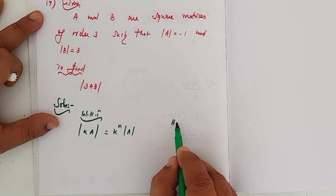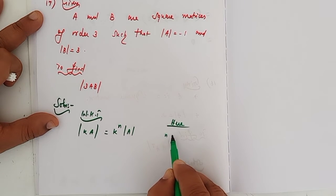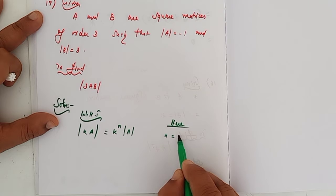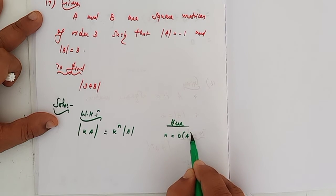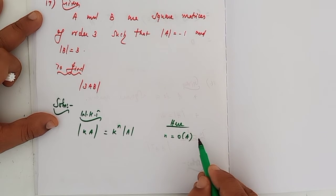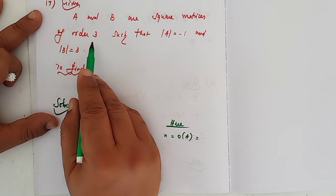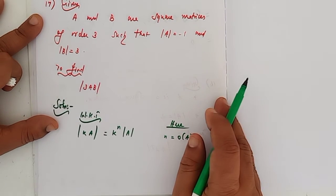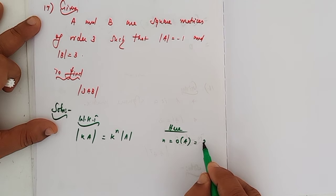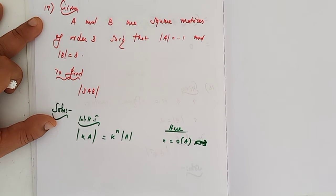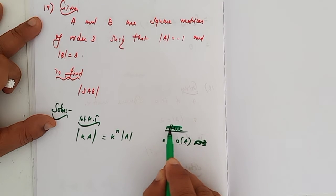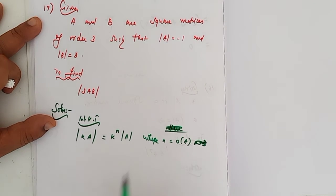Here n is the order of A. What is the order of A here? n is 3 because it's a 3 by 3 matrix. So n equals 3, where n is the order of A.